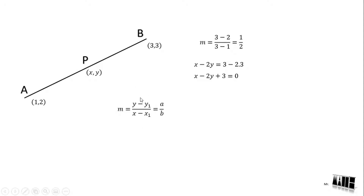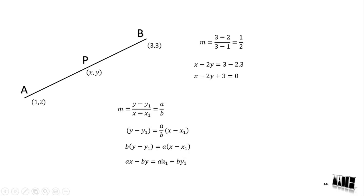This is the value of x1, y1. a times (x minus x1), and then 2 times a times (x minus x1), which gives a times x minus b times y equal to a times x1 minus b times y1.